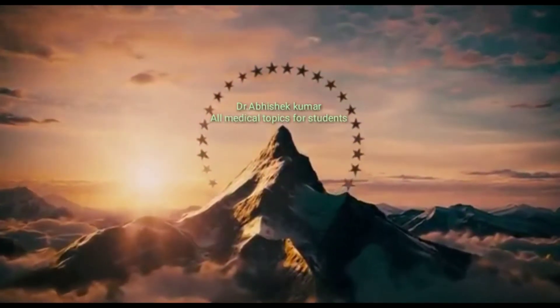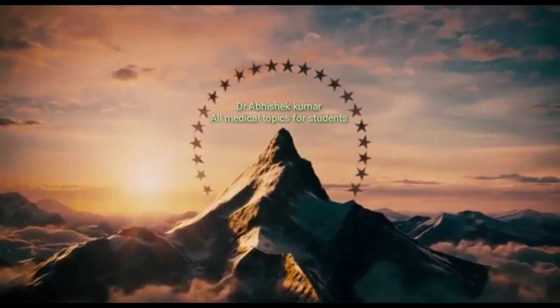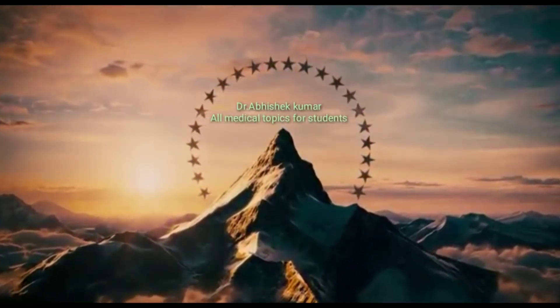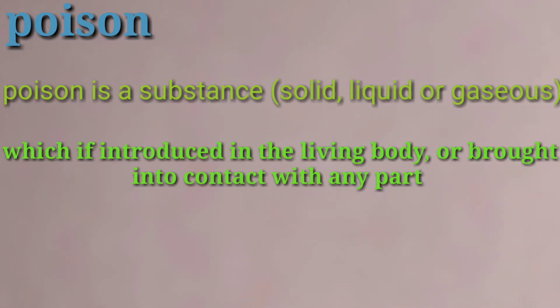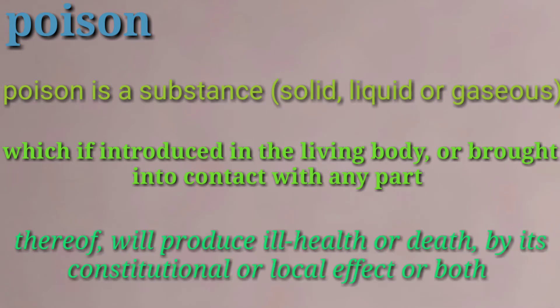Welcome to our YouTube channel, Dr. Visek Mar. Today we are going to learn about the classification of poison. First, we will see the definition: poison is a substance — solid, liquid, or gaseous — which if introduced in a living body or brought into contact with any part thereof, will produce ill health or death by its constitutional or local effect, or both.